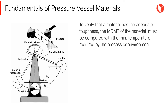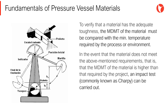To verify that a material has adequate toughness, the MDMT of the material must be compared with the minimum temperature required by the process or environment. The MDMT is the minimum design metal temperature. In the event that the material does not meet these requirements — that is, the MDMT of the material is higher than required by the project — an impact test, commonly known as CHARPY, can be carried out to determine the exact properties of the chosen material.